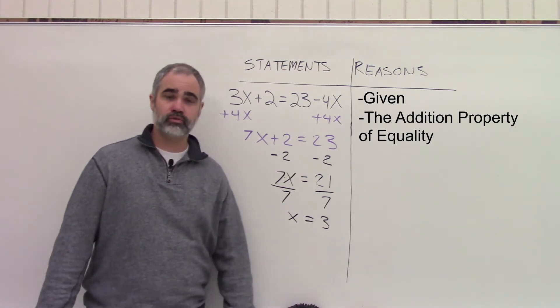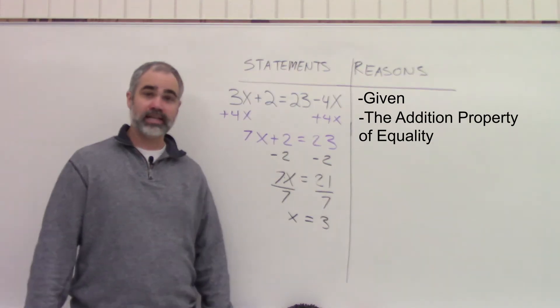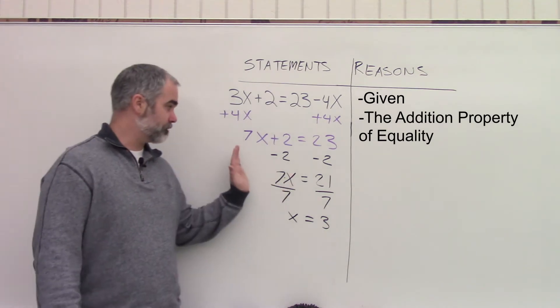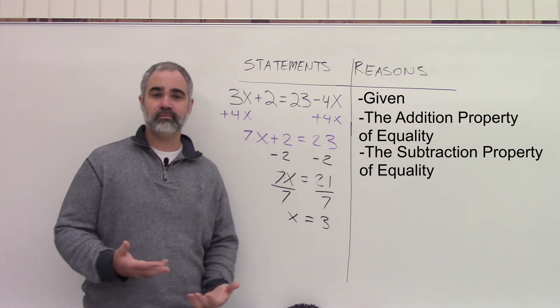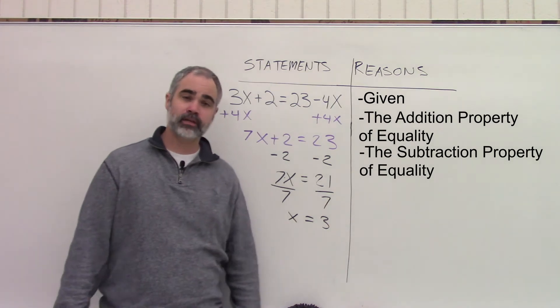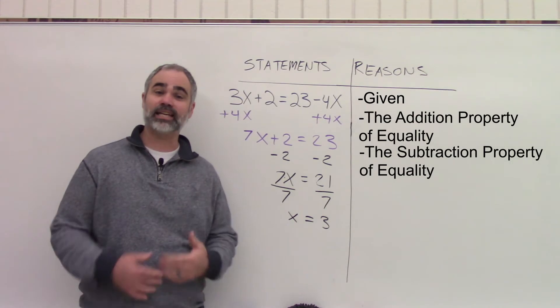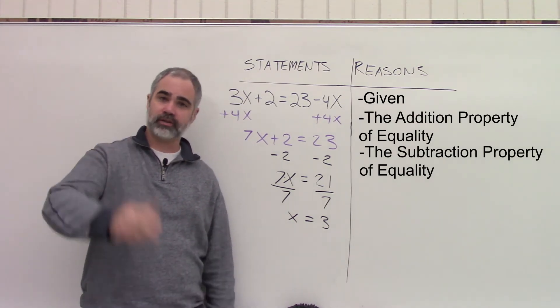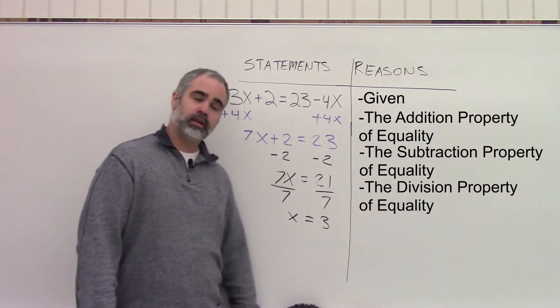Here, I subtracted 2 from both sides. Still following the golden rule. So what I'm going to do there is I'm going to write the subtraction property of equality. You're starting to get the idea here. All of these things have the word equality in them because it deals with what you can do to both sides of an equal sign. Lastly here, I have taken 7x and divided both sides by 7. I can do that because I've done it to both sides. And if you're guessing right now, I hope you're shouting at the screen what you think this is. It's the division property of equality. We're going to go ahead and put that in there.